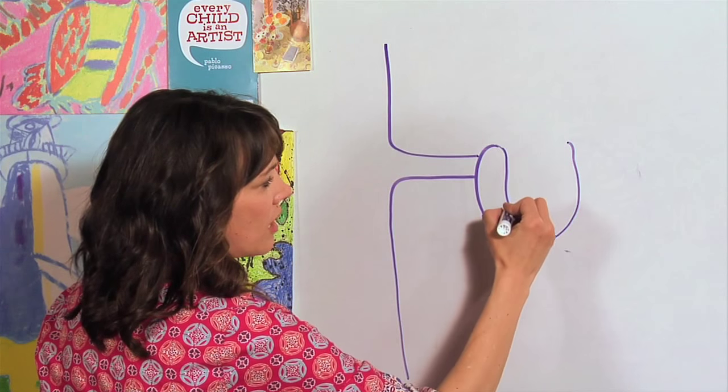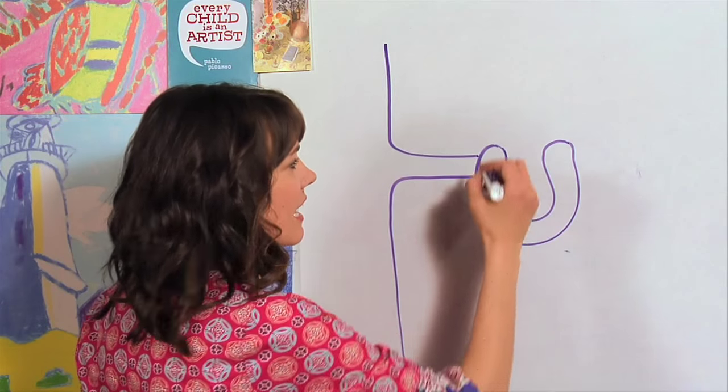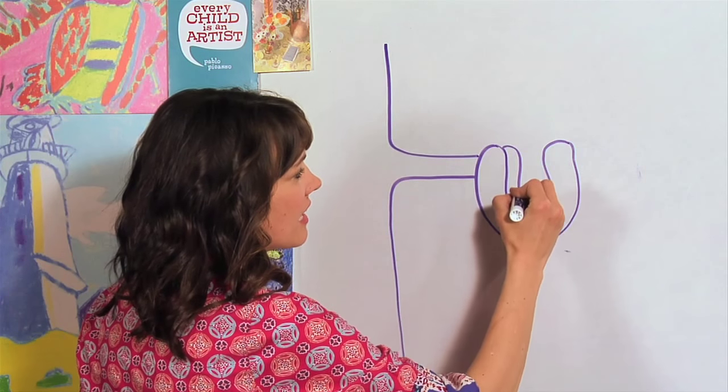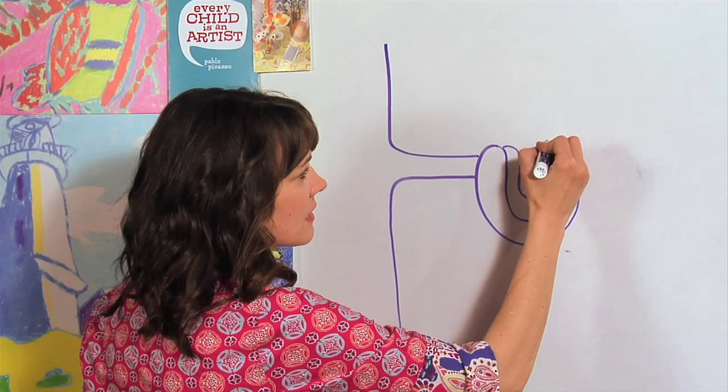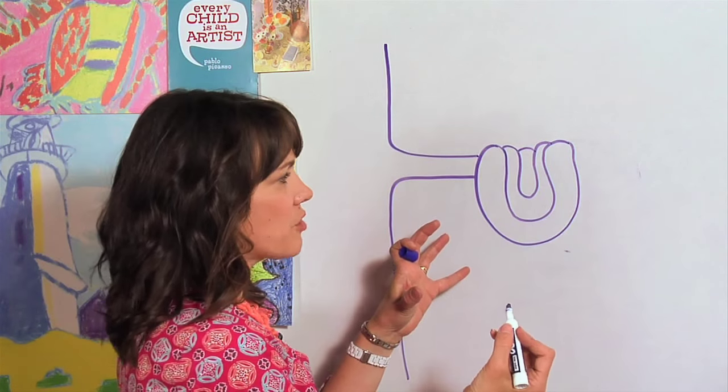Now I'm just going to draw a curved line. It kind of looks like a fat U, right? And then we're just going to draw again, curved, and one more curve in there. So it's all coiled up around the tree.